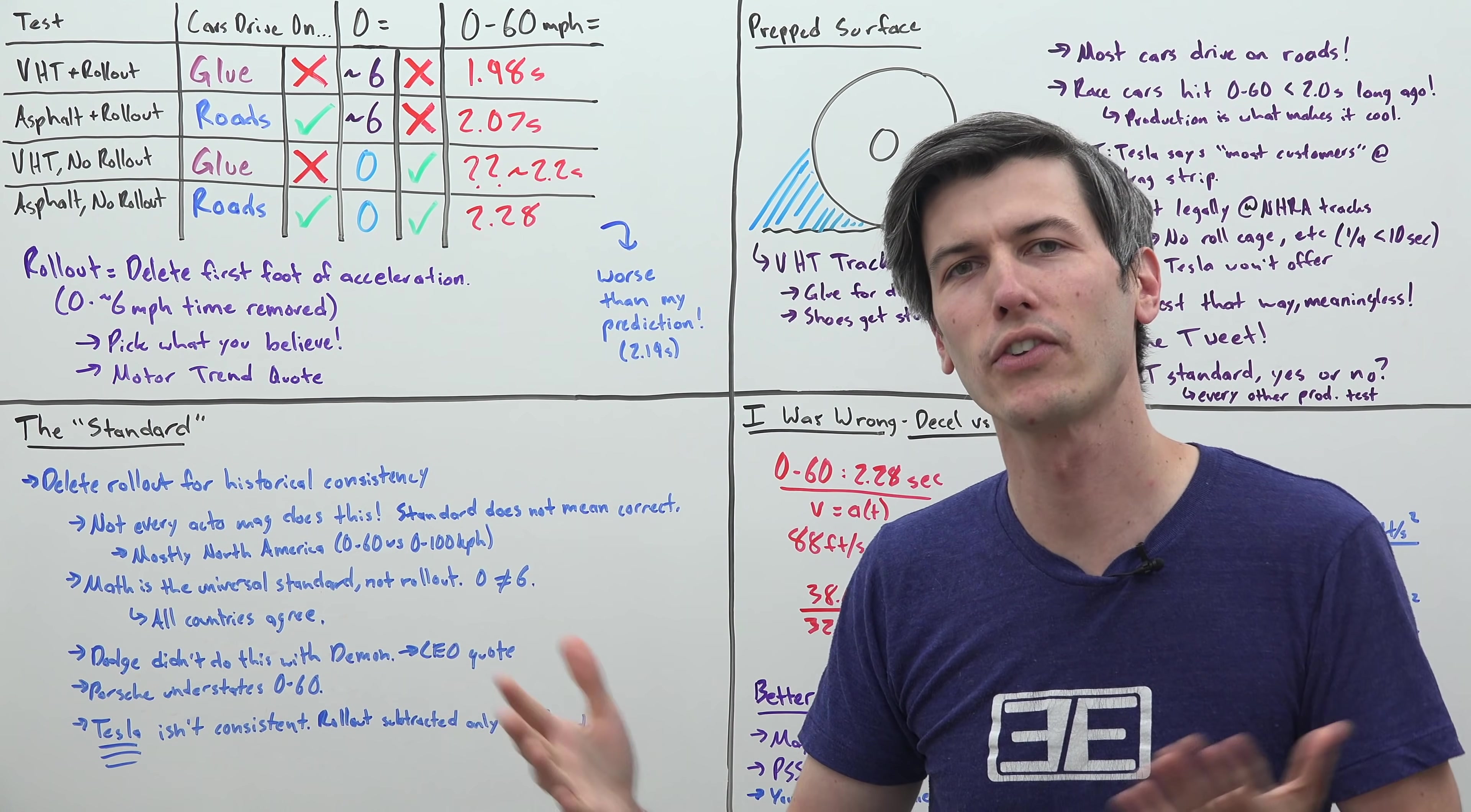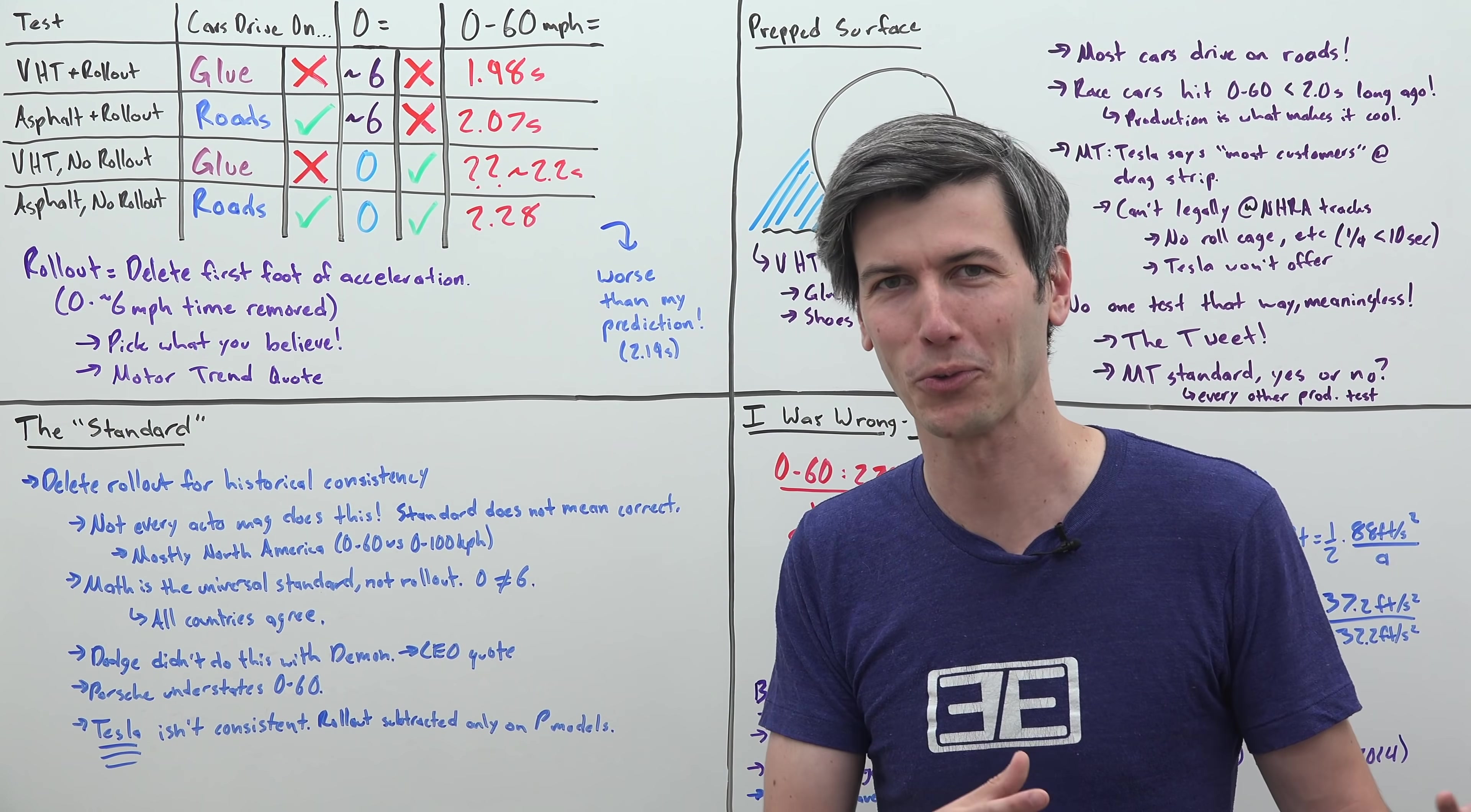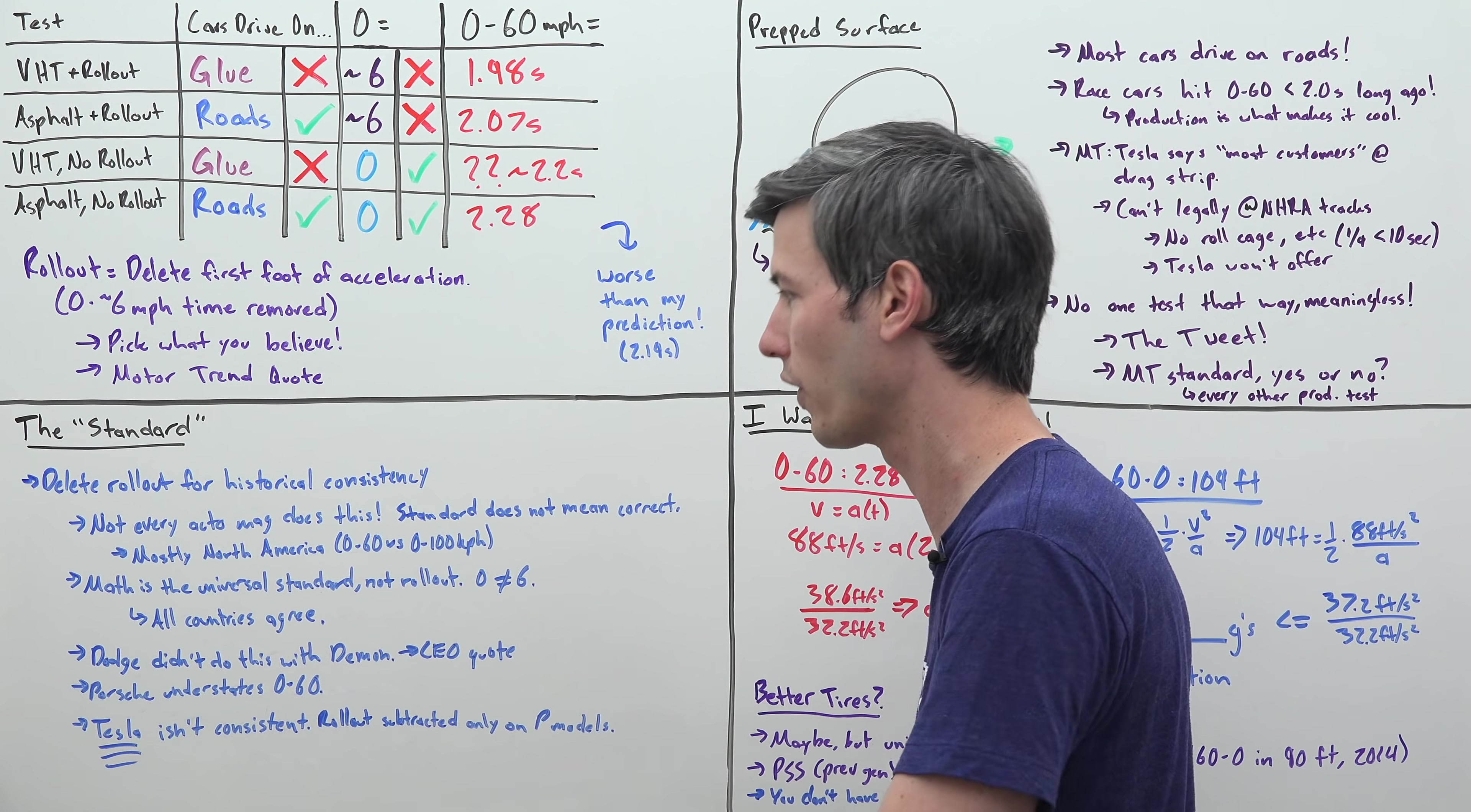Let's talk about this standard, because everyone says it's okay to say the 0 to 60 is under two seconds because of this standard of deleting that first foot of rollout. First of all, not every auto magazine does this. It's mostly a North American trend because we do 0 to 60 miles per hour, not 0 to 100 kilometers per hour. But math is the universal standard. Saying something like starting at six miles per hour is not a universal standard. If you tell someone in another country to do this test from zero, they're going to think you actually mean zero. Math is universal. Zero means zero, it doesn't mean six.